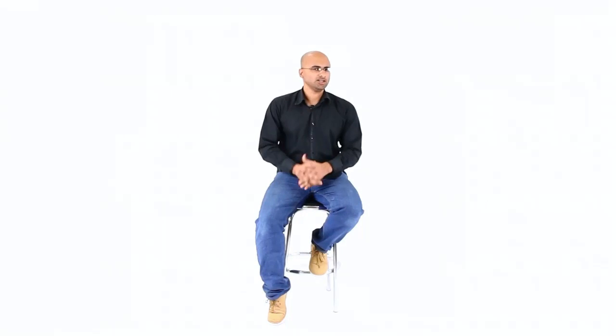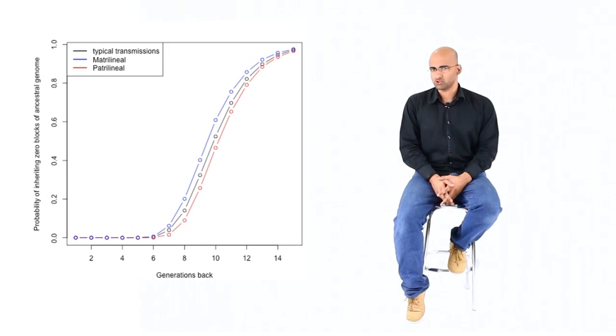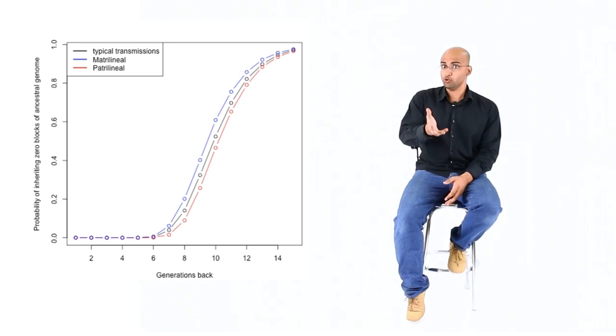In this article here, it was calculated how much of your genome do you inherit from a particular ancestor. And it was found that after about the tenth generation or so, the probability of you passing a genomic block to a particular grandchild approaches almost zero. This means that after about ten generations, your influence on the gene pool becomes less and less. And at that point, you could say that you have ceased to exist.